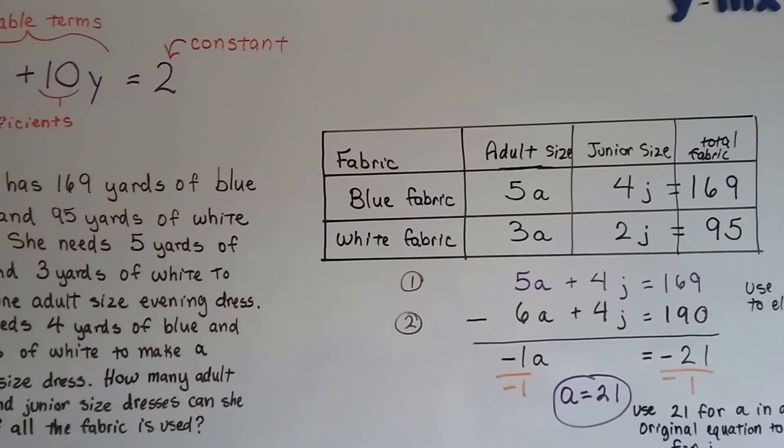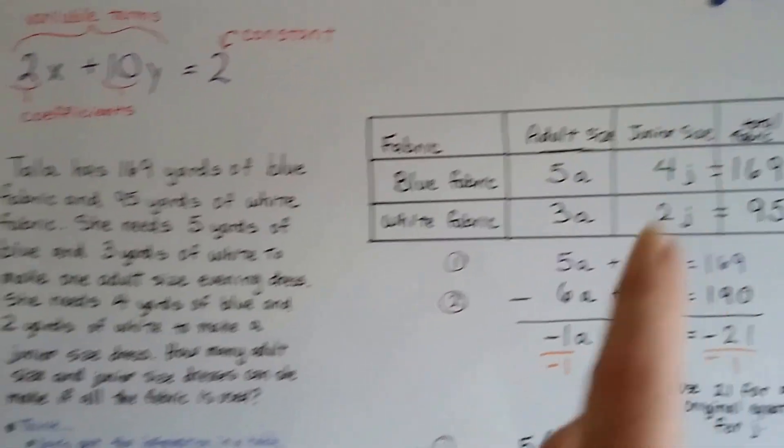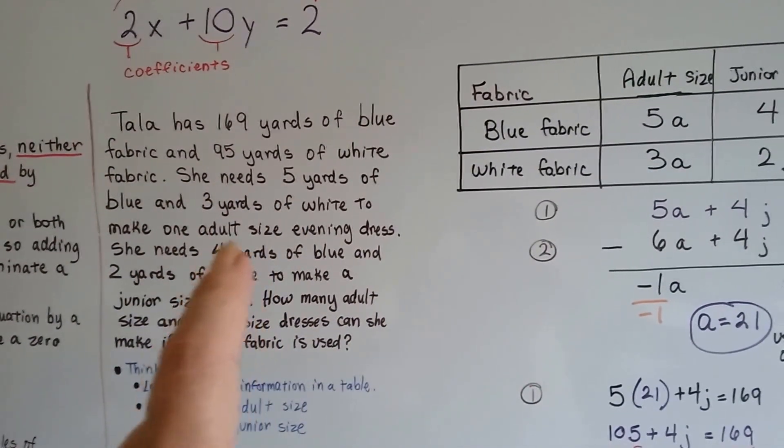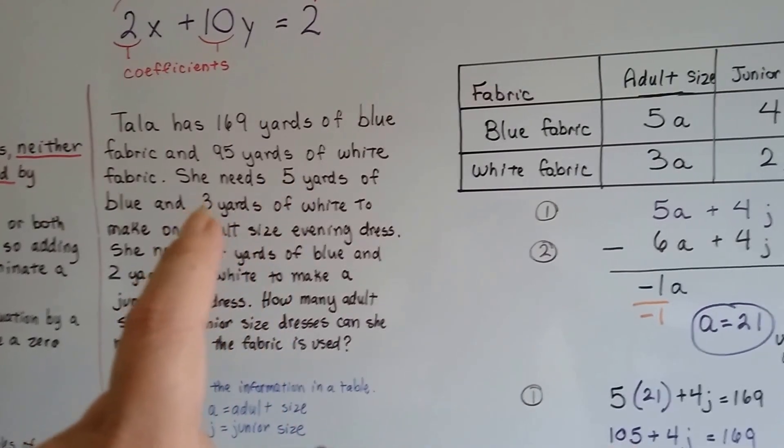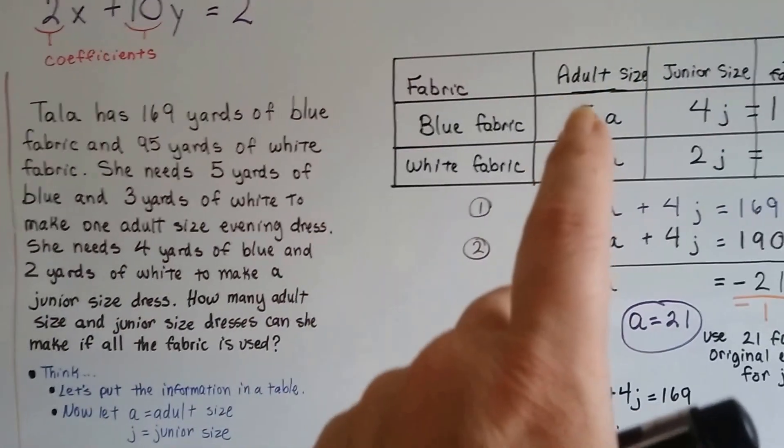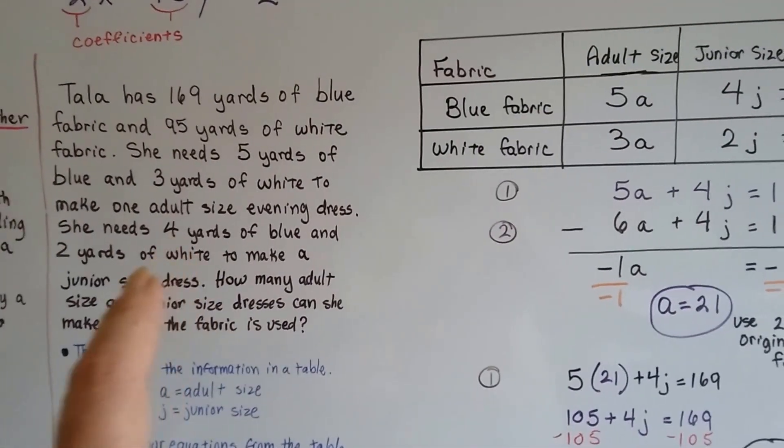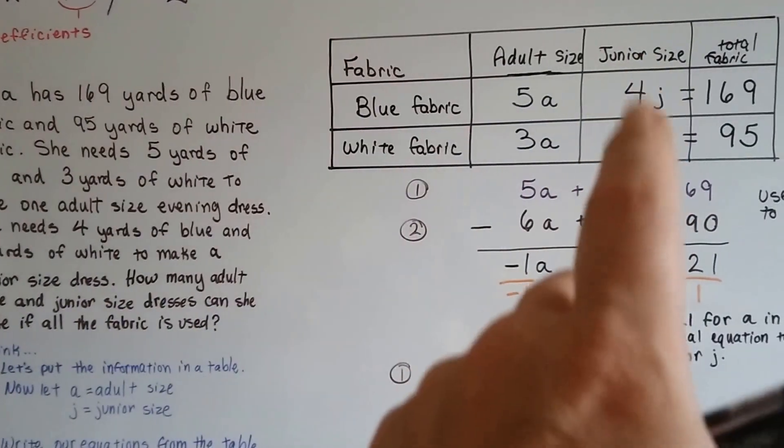Now, the columns that we need to make are adult size and junior size because those are the two things that are offered in the word problem. And it says 5 yards of blue and 3 of white for the adult size. So that's 5 and 3 and 4 yards of blue and 2 yards of white for the junior size.